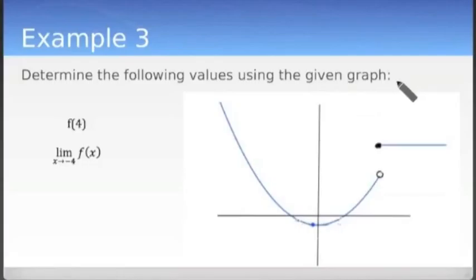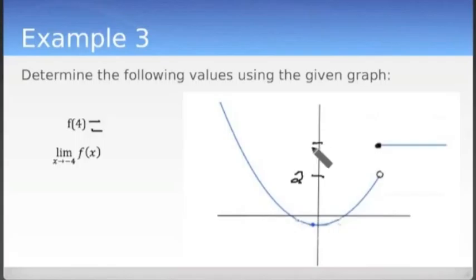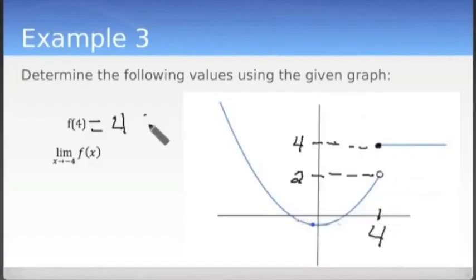Determine the following values using the given graph. Here we're going to do a graphical format. Let's evaluate f of 4. Remember, f of 4 is not the void point, because that is not in the range of the function. However, this filled point is included as part of the graph — let's say this is 2 and this is 4. So f at 4 is going to be this point, and therefore f at 4 is 4. At x equals 4, the y value is 4.